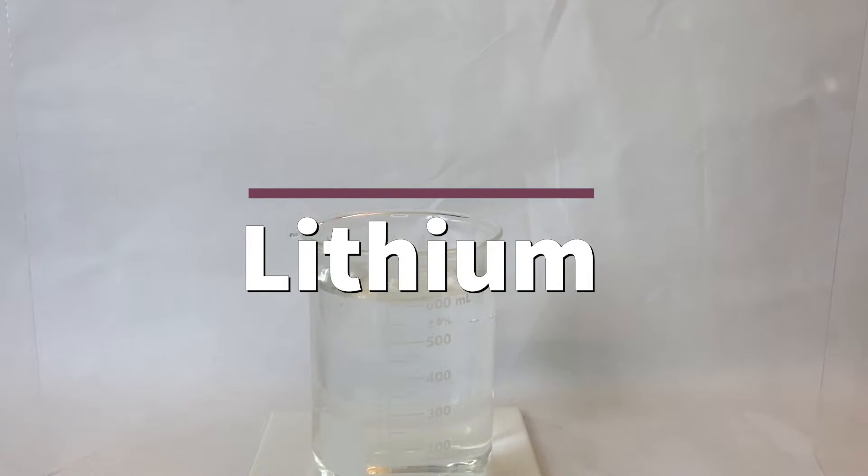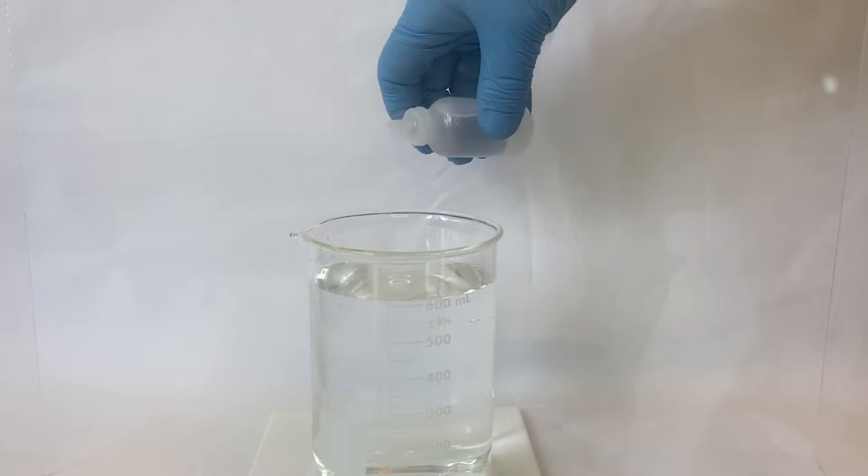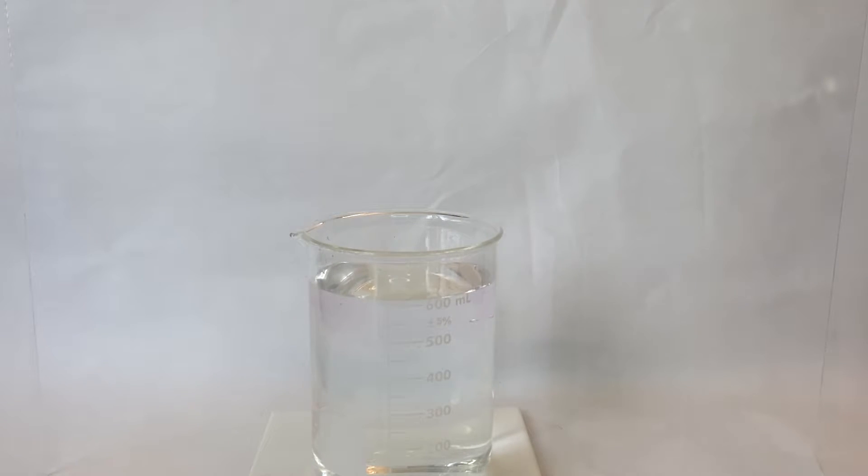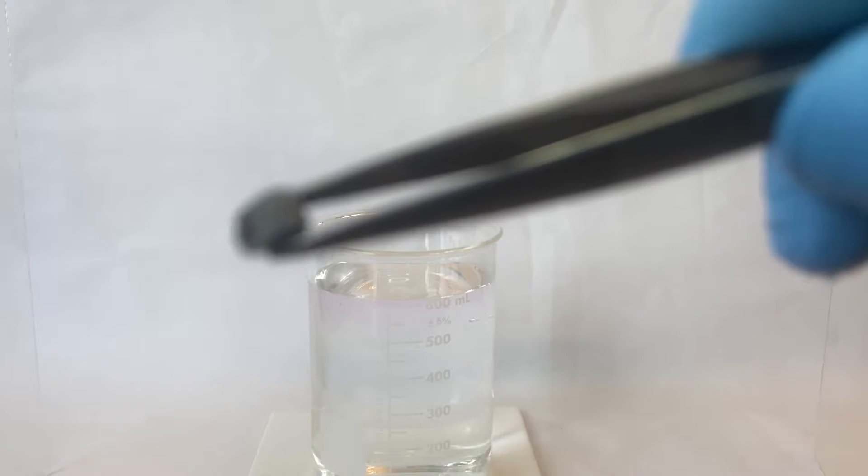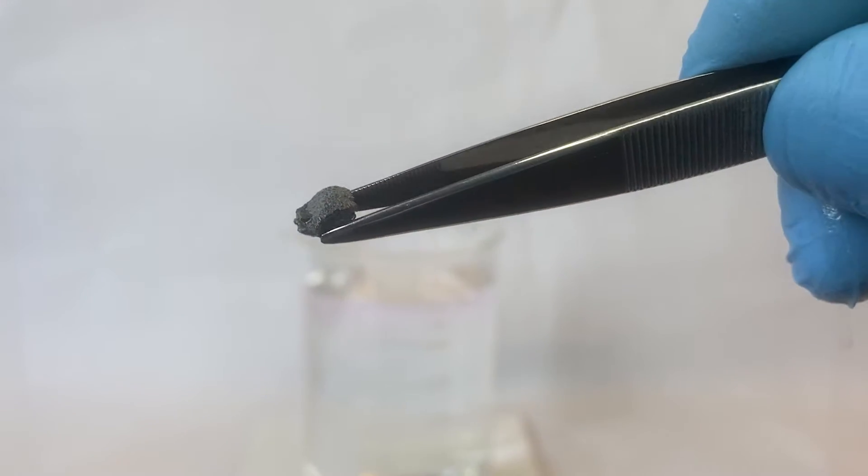We will start with lithium today. I'm going to take a beaker full of distilled water and to that I'm going to add a few drops of the pH indicator phenolphthalein. Notice that the phenolphthalein is initially clear as we assume the pH of this water is approximately neutral. Here is our sample of lithium. The alkali metals are low density metals and they tend to be very soft. They're very easy to cut with the spatula or the forceps. Let's drop our lithium into the beaker and see what happens.